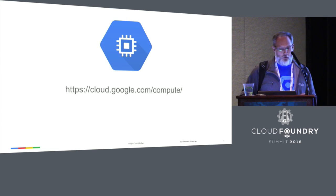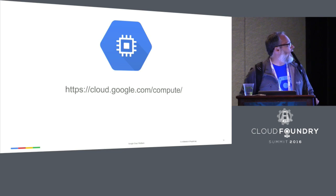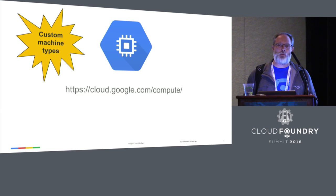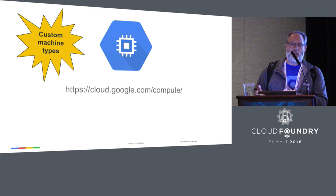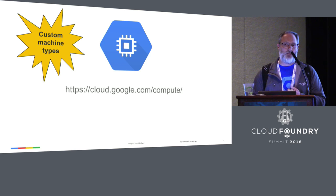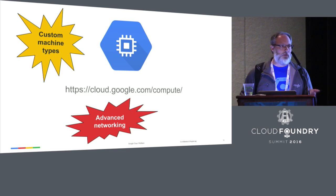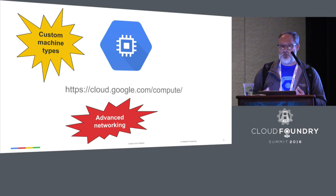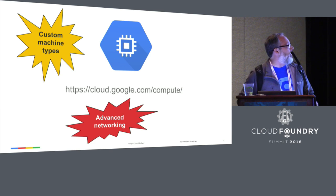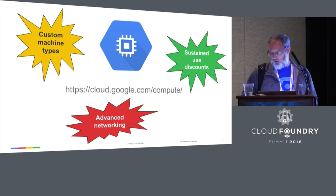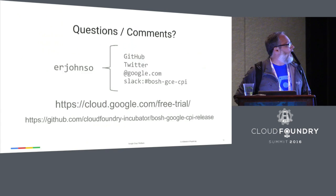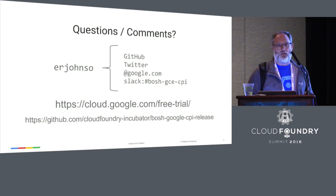A little about Google Compute Engine: we have discrete machine sizes but also customizable machine sizes, so if the static CPU and memory options don't fit your needs you can create your own. For advanced networking, the load balancer you'd spin up in front of your Cloud Foundry instance is the same load balancer we use internally for Gmail, YouTube, and Maps — so there's a lot of power there. We also have sustained use pricing, so the longer these instances run the cheaper they get. You can find me if you have questions, and I encourage you to try the free trial — the link to the repo is there as well.